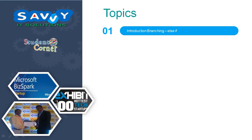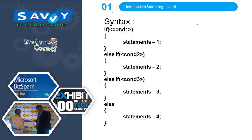Initially we are discussing about LC/FL ladder. Now we are discussing the syntax. If condition 1 is true, then statement 1 will be executed. If condition 1 is false then we are checking condition 2; if condition 2 is true then statement 2 will be executed. If condition 2 is false then condition 3 will be checked; if condition 3 is true then statement 3 will be executed. If it is false then the else part will be executed and statement 4 will be executed. So this is simply the meaning of the syntax of LC/FL ladder.